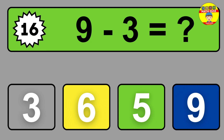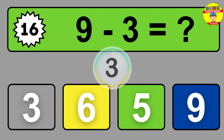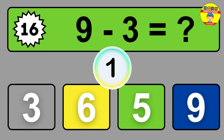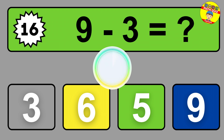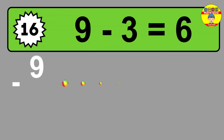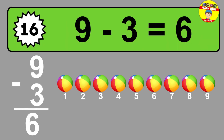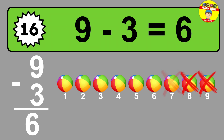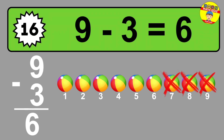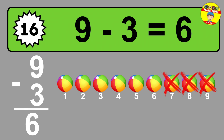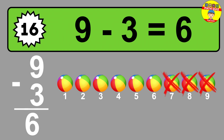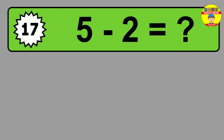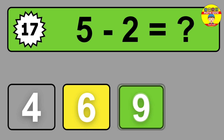Question 16. 9 minus 3 equals what? So the answer is 9 minus 3 is 6. Let's count it: 1, 2, 3, 4, 5, 6.